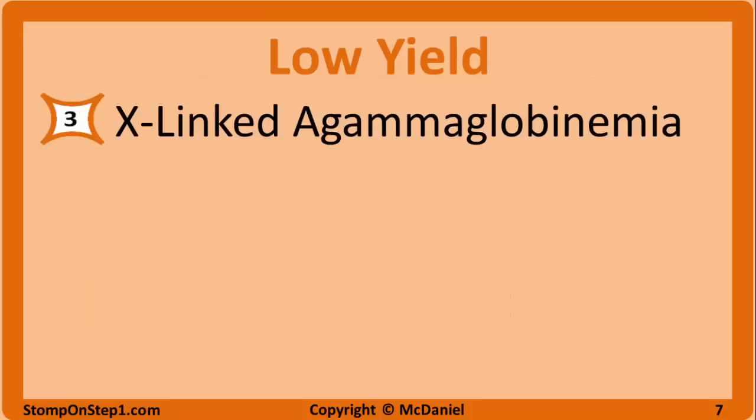Now we're getting into some of the lower yield material, but this is stuff that's probably still worth studying because it is somewhat likely to show up on the exam. This is still in the range of stuff you should look at in the weeks leading up to your exam. X-linked agammaglobulinemia — you want to identify the general picture of immunodeficiencies based on a clinical description, know how it's linked to a defect in Bruton tyrosine kinase, how patients have low levels of all immunoglobulins, and what infections they are most susceptible to.